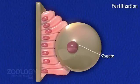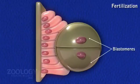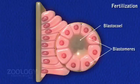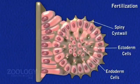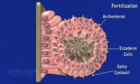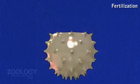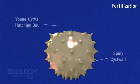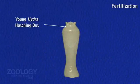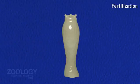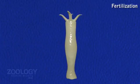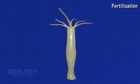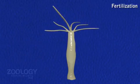Development: The development of the zygote begins soon after fertilization. While the zygote is still attached to the parent, it undergoes cleavage, blastulation, gastrulation, encystation, and hatching. The embryo elongates and a circle of tentacle buds develops at one end, with a mouth appearing in their midst. As the embryo increases in size, the shell ruptures and a young hydra with tentacles hatches out. It rapidly grows into an adult. There is no free larval stage in the development of hydra.